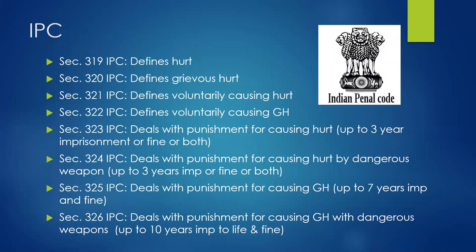The IPC sections from 319 to 326 deal with different types of hurt. Section 319 defines hurt, Section 320 defines grievous hurt, Section 321 defines voluntarily causing hurt, Section 322 defines voluntarily causing grievous hurt, and Section 323 deals with the punishment for causing hurt.